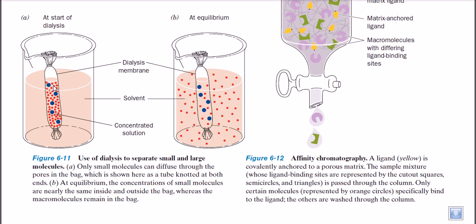So if we need to separate large proteins from smaller proteins, the small proteins go outside and the large proteins remain inside the bag. If we then need to separate the small proteins from the large proteins further, we proceed to gel filtration chromatography or size exclusion chromatography, where large molecules elute faster. After dialysis separation, the large molecules primarily remain in the dialysis bag, though some small molecules may still be present.